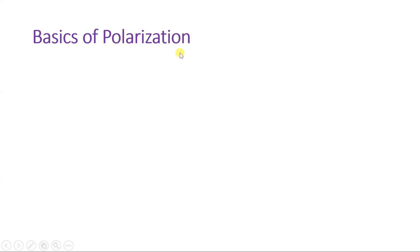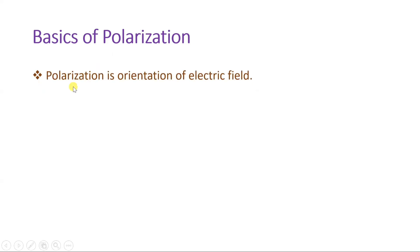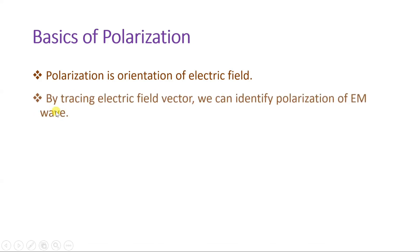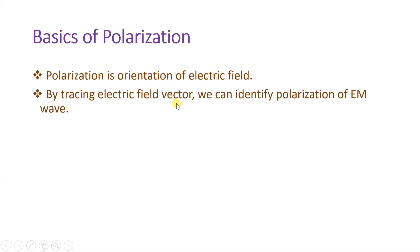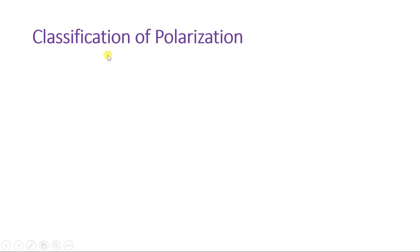We should understand what is the meaning of polarization. In electromagnetic waves, when electromagnetic waves travel in space, the orientation of the electric field defines polarization. In short, polarization is the orientation of the electric field. So polarization explains what is the orientation of the electric field in propagation of an EM wave. By tracing the electric field vector, we can identify which type of polarization is there.